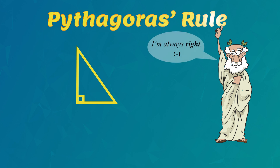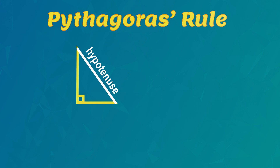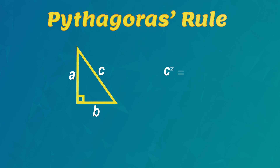Here is his rule. The longest side is called the hypotenuse. It's marked with the letter C. The other sides are A and B. Pythagoras' rule is C squared equals A squared plus B squared.